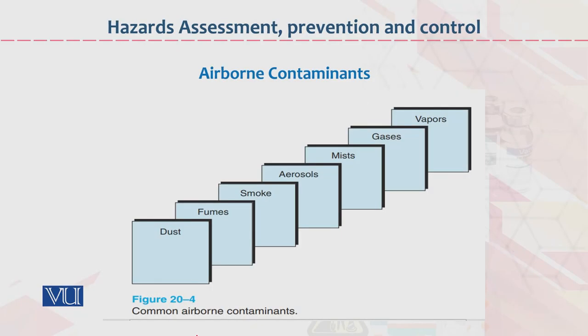Airborne contaminants ki yeh diagram hai, dear students. Dust, fumes, smoke, aerosols, mists, gases, vapors — these are airborne contaminants. Yeh common contaminants hain jo ki aksar airborne mein paai jati hain. In ko dekhna, samajhna, analyze kerna, in ko control kerna — yeh bhoat important hai.